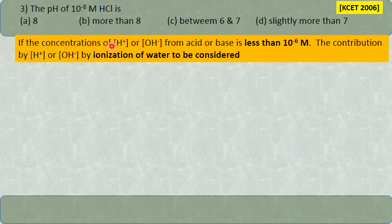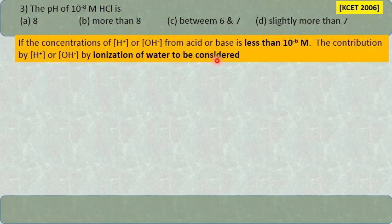The reason: if the concentration of H⁺ or OH⁻ from acid or base is less than 10⁻⁷ moles—meaning 10⁻⁷, 10⁻⁸, 10⁻⁹, etc.—then the contribution by ionization of water must be considered. Since this concentration is less than 10⁻⁷, we have to take the ionization of water also into consideration.